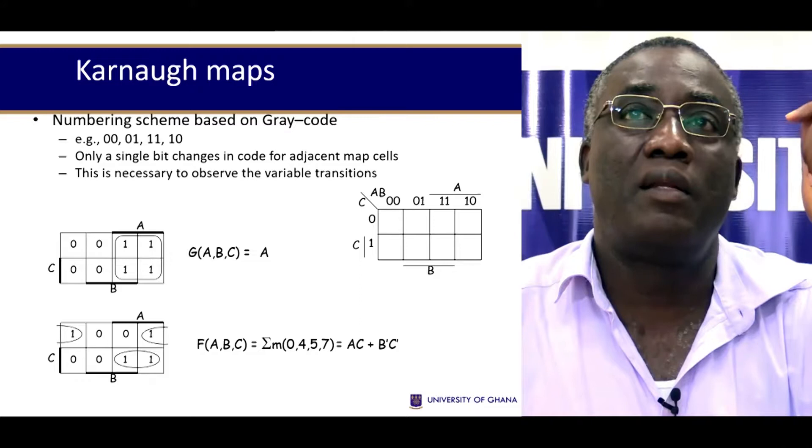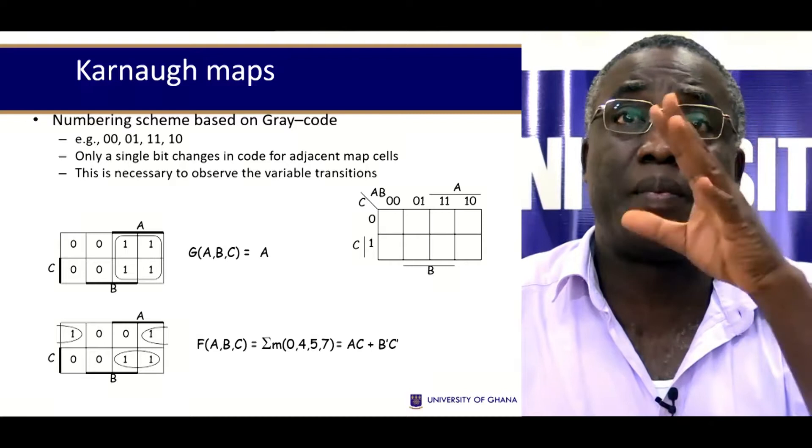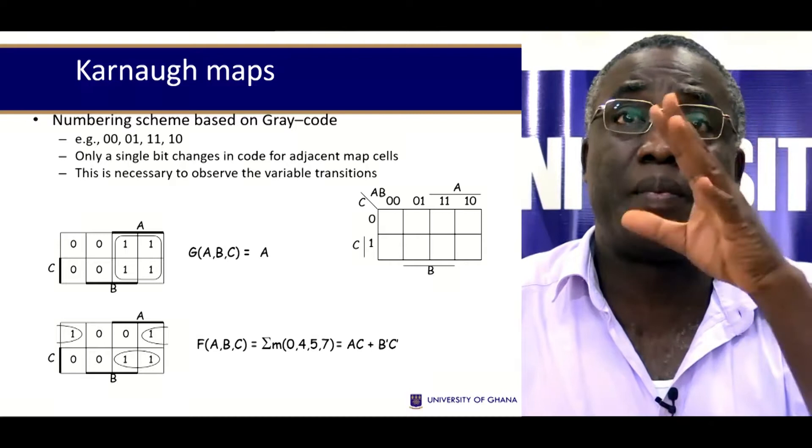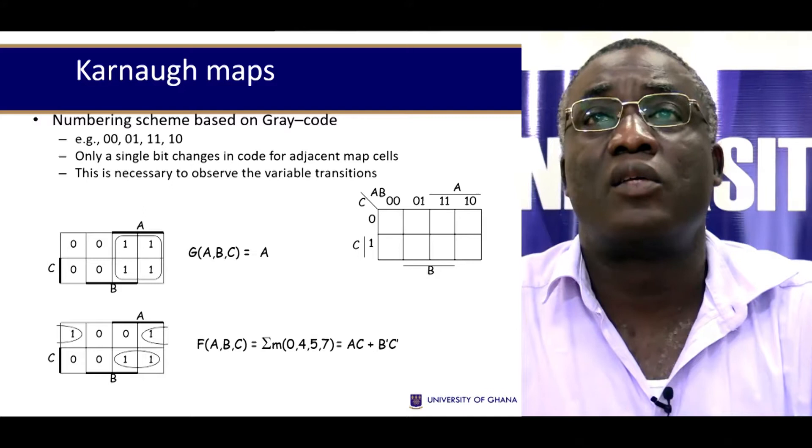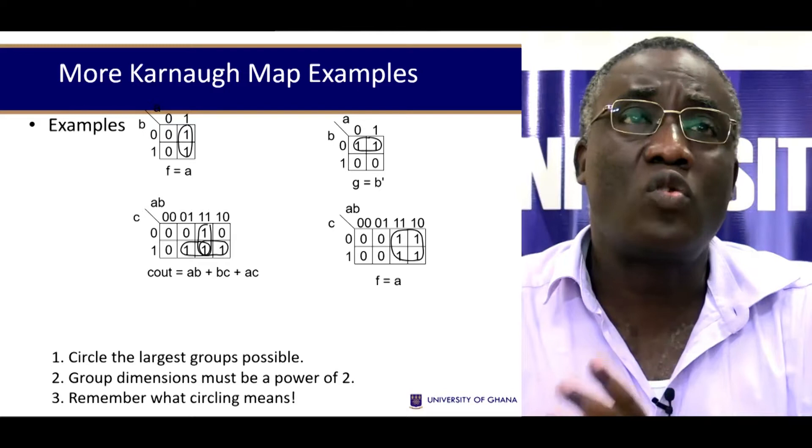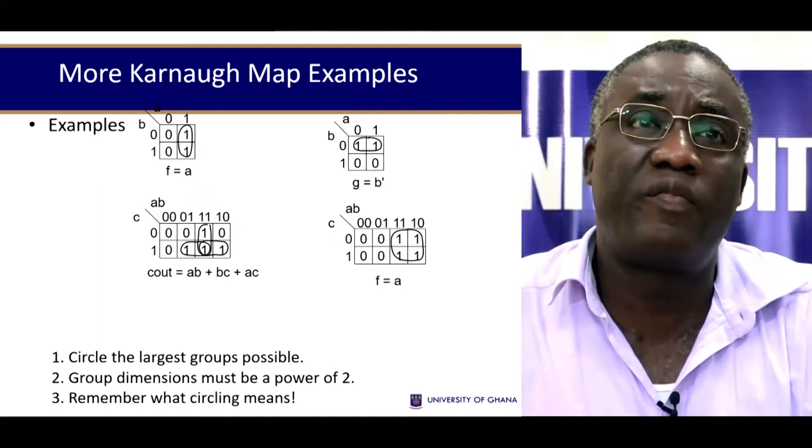There are a number of examples here which you can look at. Again, remember what I told you that you need to use a gray code, so only a single bit changes in code for adjacent map cells. So as you go along the cells, only a single bit changes. So there are more examples for you to look at and work out and verify for yourselves that it is correct.